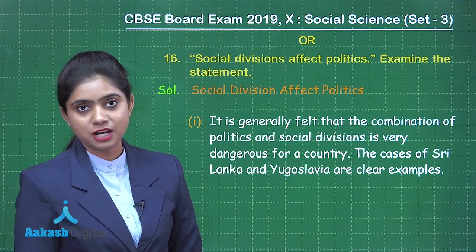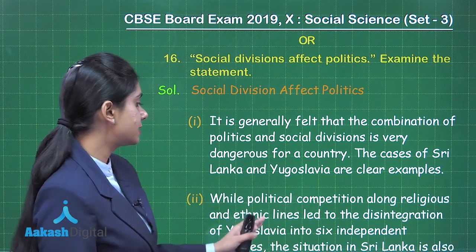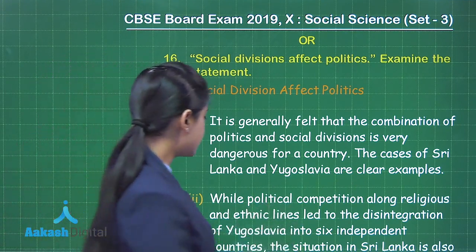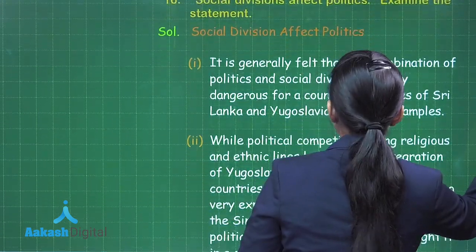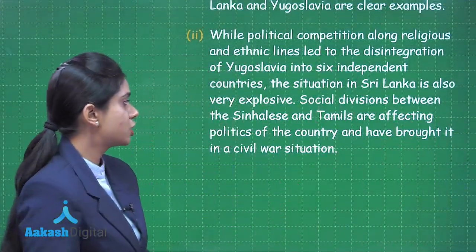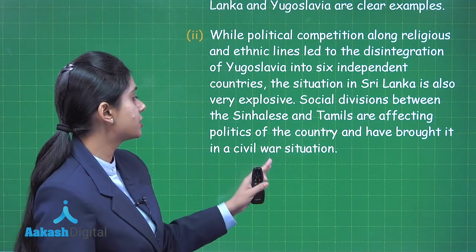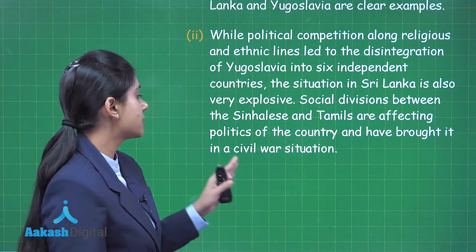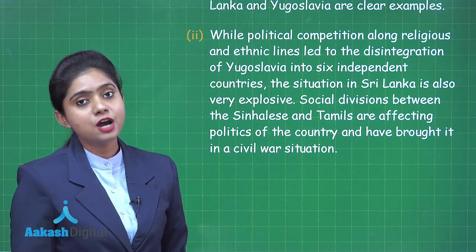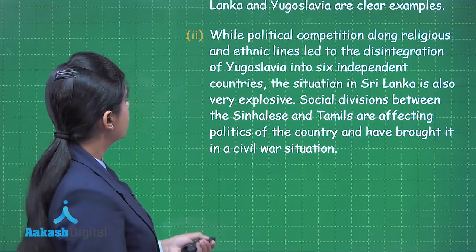The cases of Sri Lanka and Yugoslavia are clear examples. While political competition along religious and ethnic lines led to the disintegration of Yugoslavia into six independent countries, the situation in Sri Lanka is also very explosive. Social divisions between the Sinhalese and Tamils are affecting politics of the country and have brought it to a civil war situation.